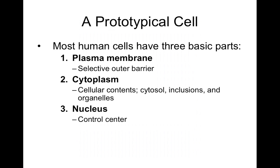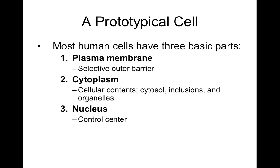A prototypical cell means a typical cell — what does it look like? There are several key parts: the plasma membrane, the cytoplasm, and the nucleus. The plasma membrane is the outer barrier of a cell that's selectively permeable — we'll come back to what that means. The cytoplasm is the inside contents of that cell, sort of like a gelatinous material — it includes protein, organelles, water, and all the stuff that makes up this inner gelatin. The nucleus is the control center of the cell because it contains most of the cell's genetic material.